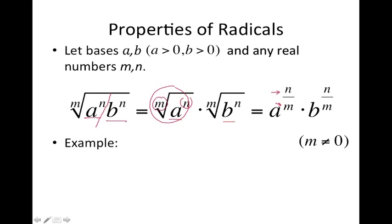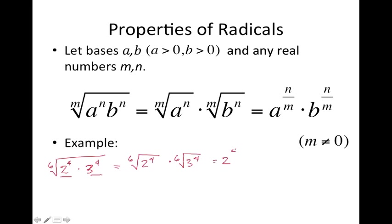So let's try an example. I know that's a lot of circles and underlines. So let's have the sixth root of 2 to the 4th power times 3 to the 4th power. So it's like saying we can split the 2 to the 4th and the 3 to the 4th separately. So we have the 6th root of 2 to the 4th times the 6th root of 3 to the 4th. And so that's like saying 2 to the 4 over 6 times 3 to the 4 over 6.